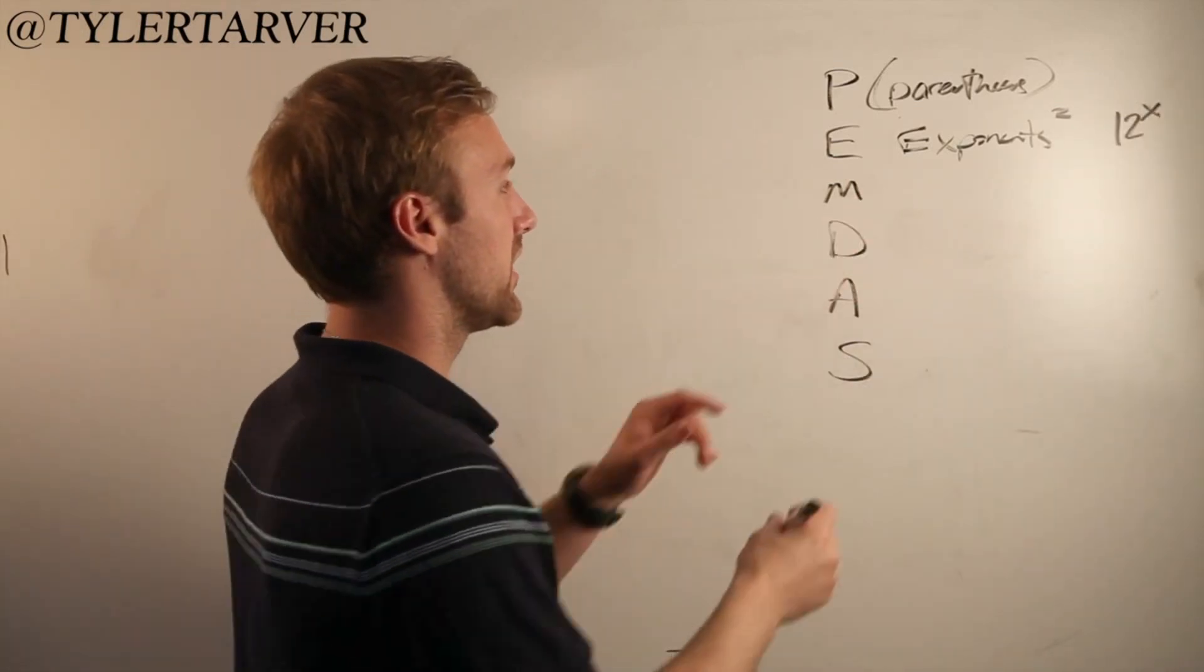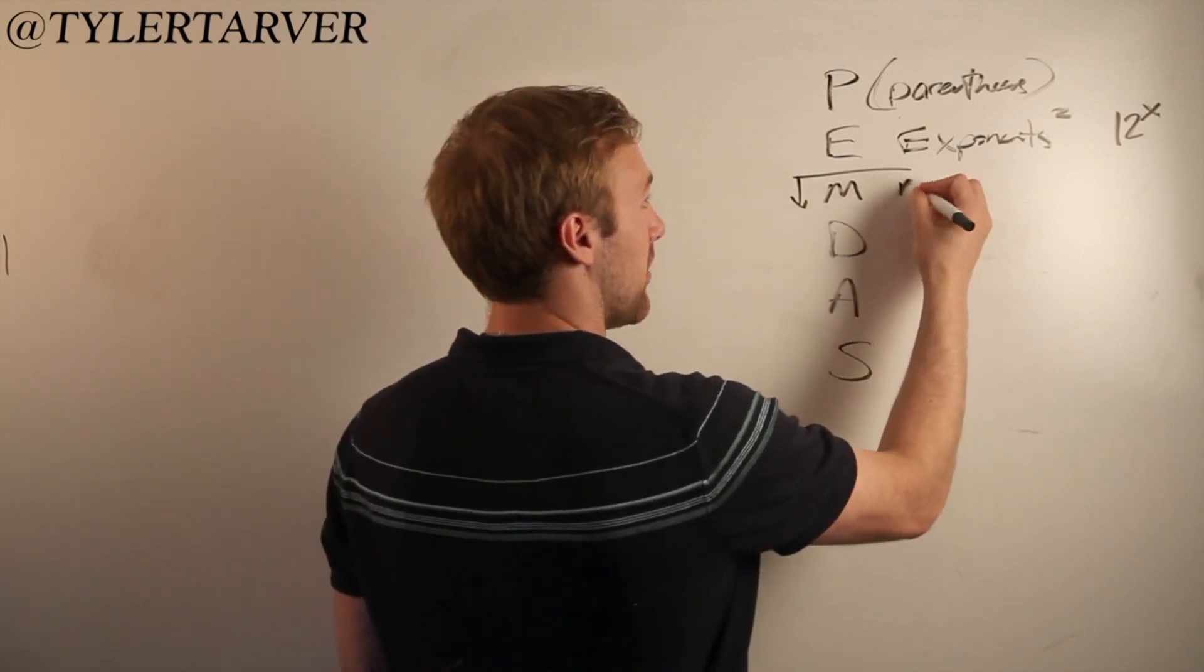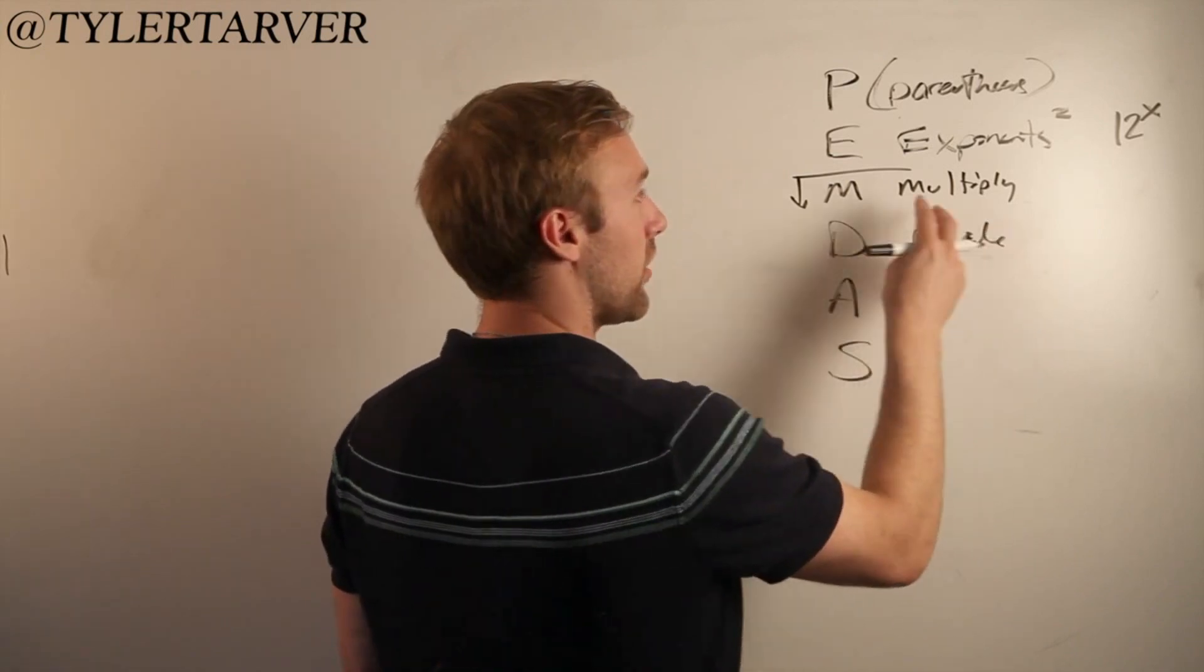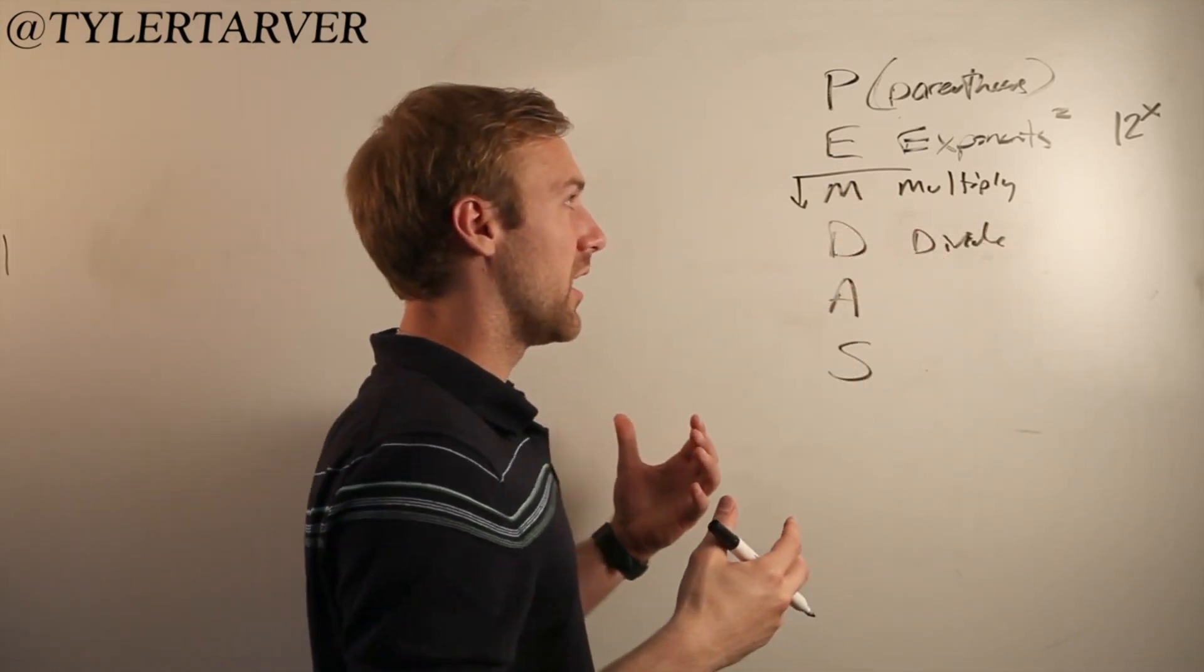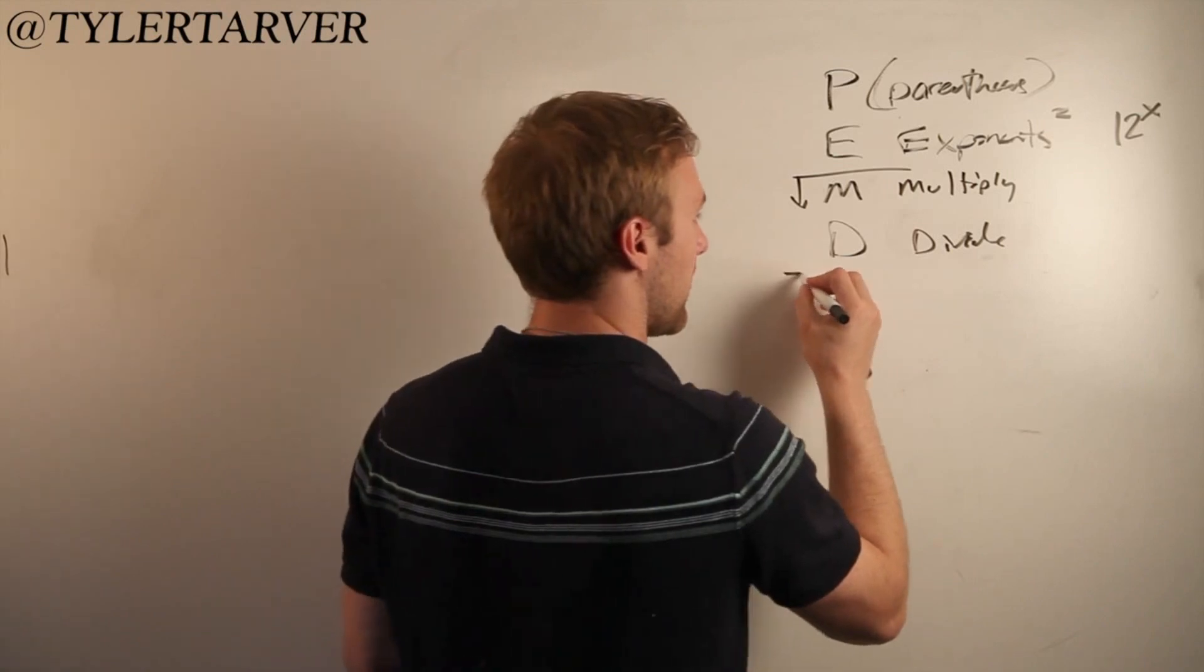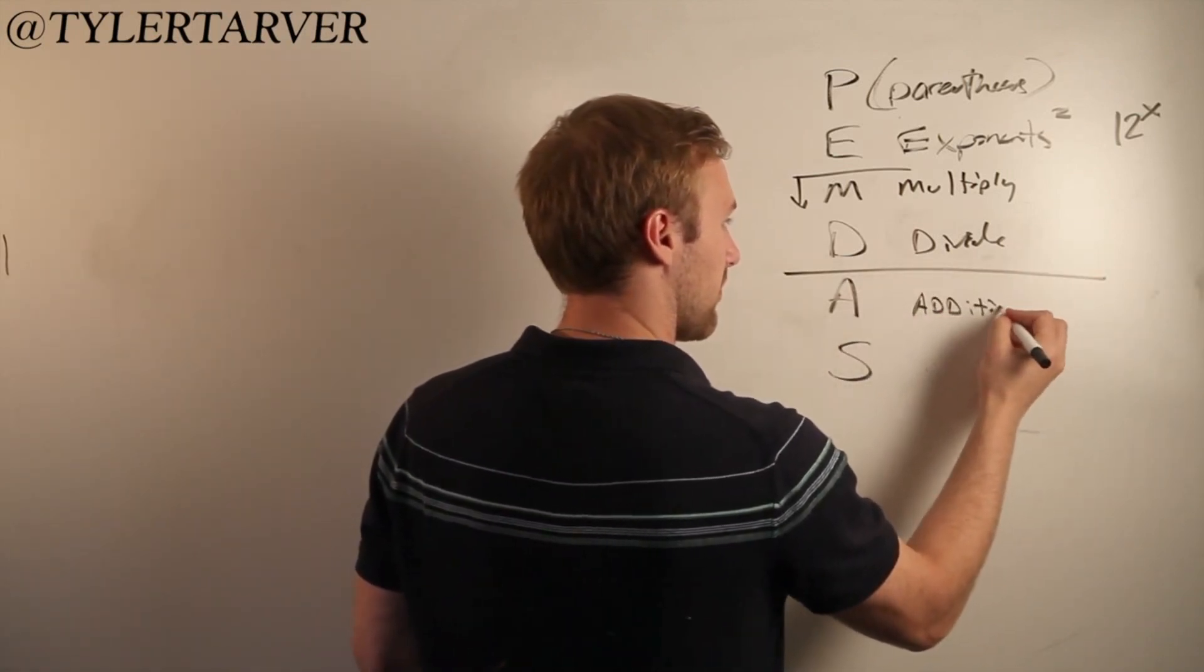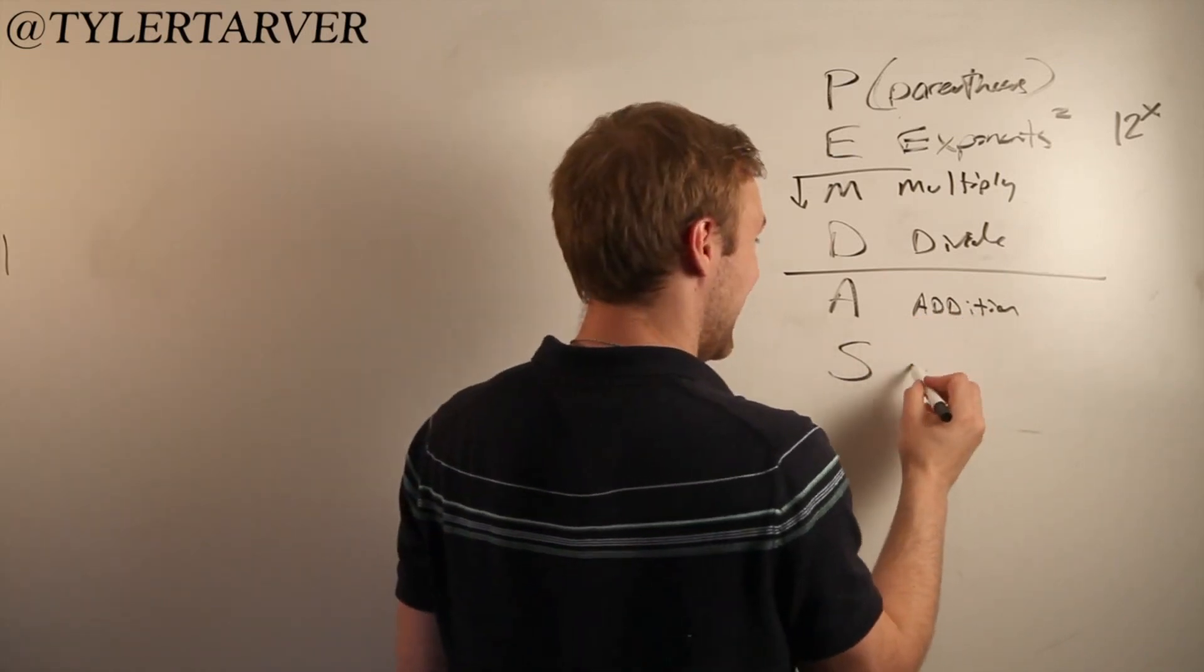Then you've got M, which is your, from here on down, is your regular multiplication. Multiply, divide. Those two are equally important. They just really depend on which one comes first in progression from left to right, just like you're reading a book. And then addition and subtraction. I don't know why I capitalized ADD. Subtraction.